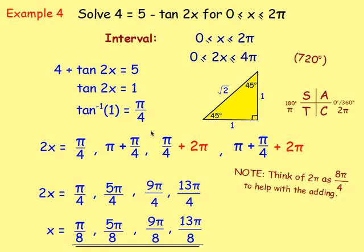The next example was very similar but the interval was 0 to 2π, so we were working in radians. You still alter the interval first, and instead of adding 360 you're adding 2π.